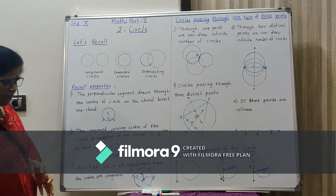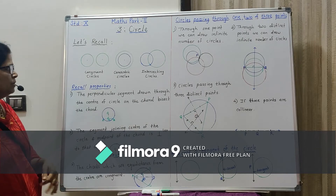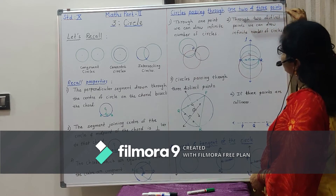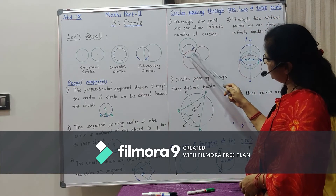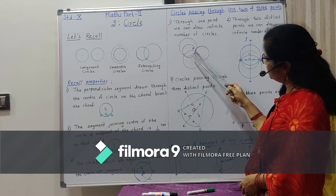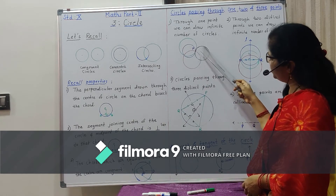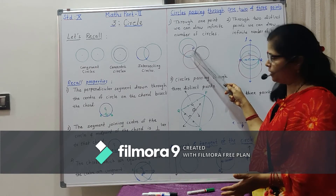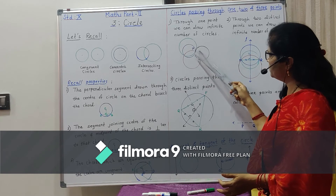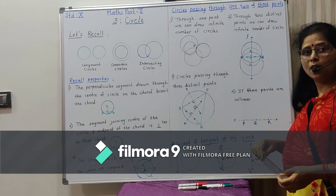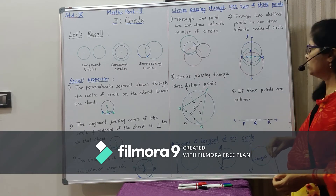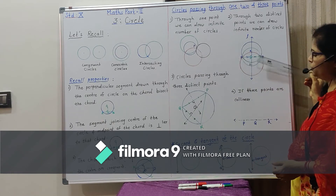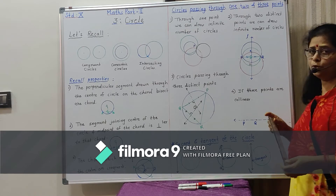These are three properties given in your textbook. Now let us see how many circles can pass through 1, 2, and 3 points. If P is a single point, we can draw an infinite number of circles passing through point P by taking different radii. Now, for two distinct points P and Q, we can also draw an infinite number of circles passing through both points.